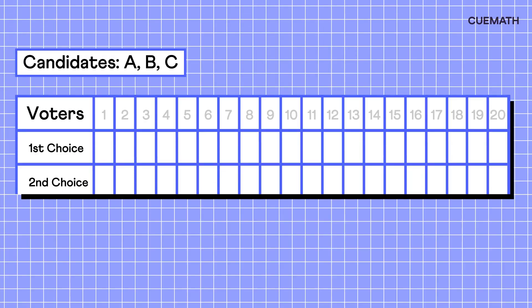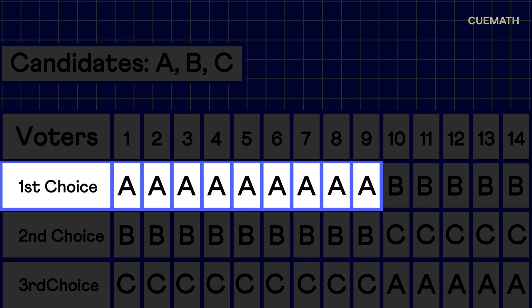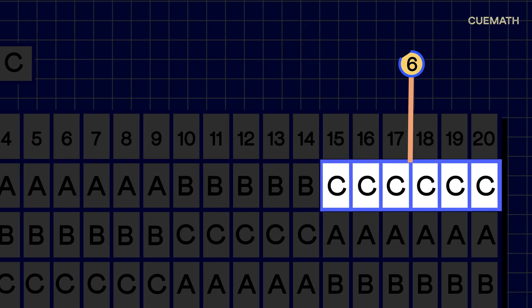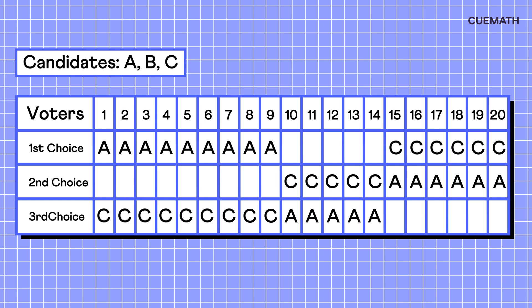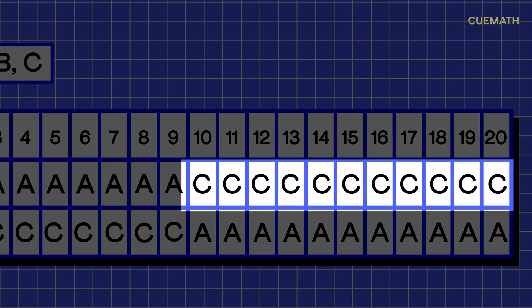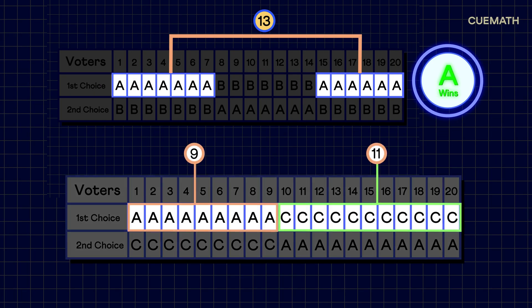Let's tweak our example a bit. We strengthen A's position by changing the preferences for 2 voters. A is now the top pick for 9 people, B 5 and C 6. Now, B is eliminated and their votes are reallocated. Strangely, C wins this time, with 11 votes compared to A's 9. Surprising, isn't it? While A was winning earlier, strengthening their position led to their loss, an odd outcome for a system aiming for fairness.